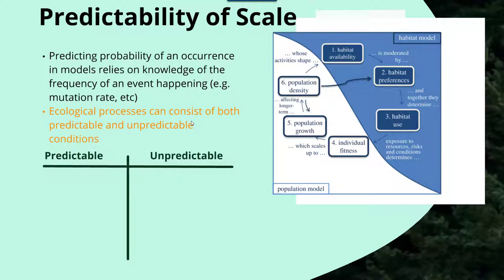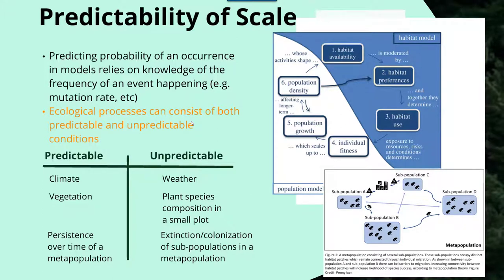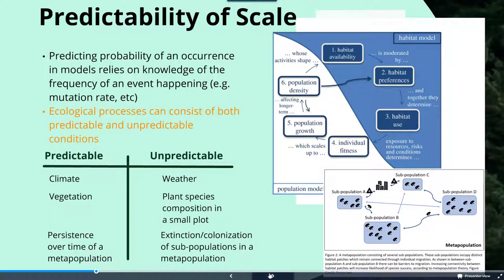Some of the predictable versus unpredictable variables are going to be related to scale. Climate tends to be predictable, although weather is not. Overall vegetation — shrub, tree, and things along those lines — is predictable, whereas the plant species composition of a small plot is going to be unpredictable. Persistence over time of a metapopulation — a group of subpopulations within a region — is predictable. However, the extinction or colonization of specific subpopulations within a metapopulation are going to be unpredictable. Those larger-scale elements tend to be predictable, where the smaller-scale ones are not.